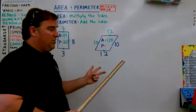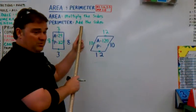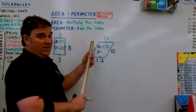So now, for perimeter we have to add the sides. So, let's go.